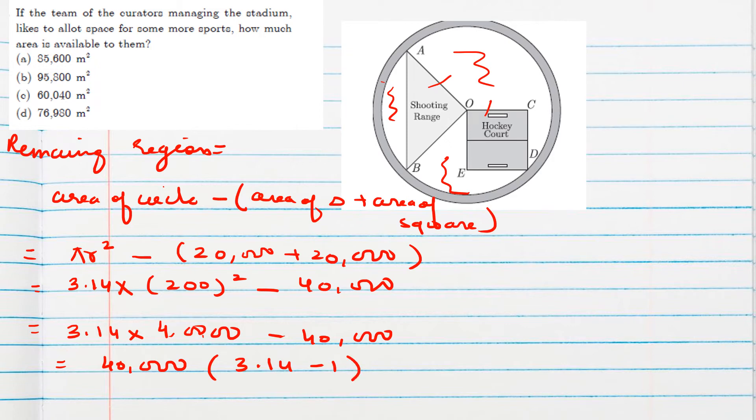So 40,000, 3.14 minus 1 means 2.14. Then we can remove the decimal also. Two digits there, so two zeros we have to remove. So 400 into 214. Two zeros will come, then 4 fours are 16, 6 and 8. So directly after getting the third digit, we can conclude because only 600 or 6 at the thousands place, only one option is having. So finally, this will be our answer.